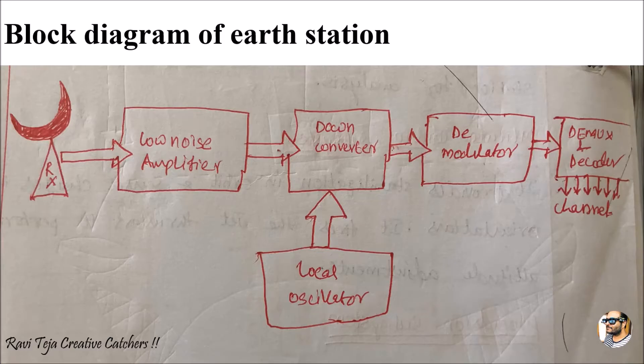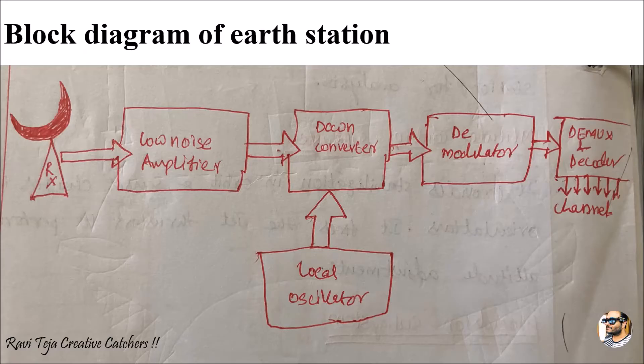We have already discussed about what satellites are and we have also seen the block diagram of satellite communication. Whenever satellites try to communicate with Earth, we need huge antennas located at a particular location. Using that antenna we communicate with a particular satellite or multiple satellites. That particular point where a huge antenna is located on the Earth for communicating with satellites can be considered as Earth Station.